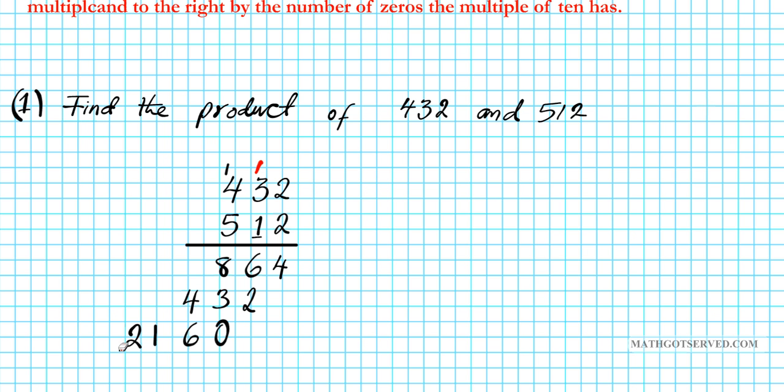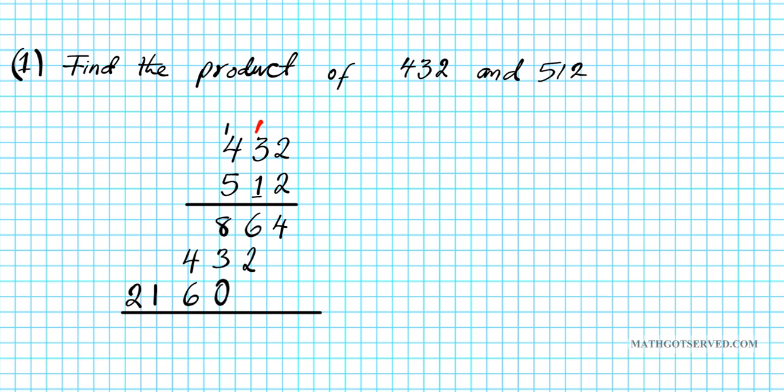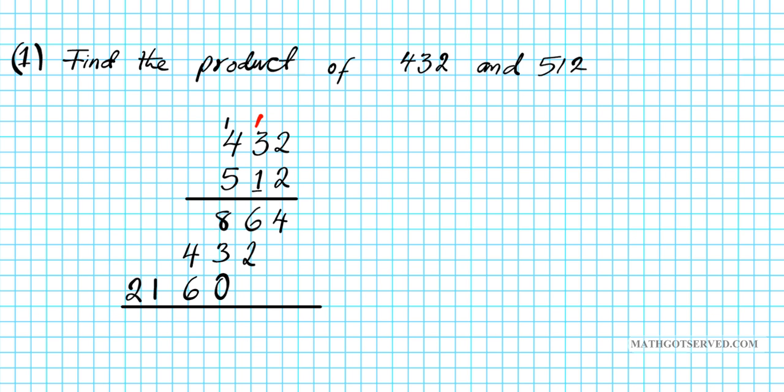So all you do is just simply add downwards and that will be your final product. If you have difficulty aligning your results, you can just put zeros here. And then just add downwards. So the operation here is addition. So you start from the right of course. 4, 6 plus 2 is 8. 8 plus 3 is 11. Plus 0 is 11. 1 carry 1. 4 plus 6, 10 plus 1, 11. 1 carry 1. 1 plus 2, 2. So the product of 432 and 512 is 221,184. That is your final answer.